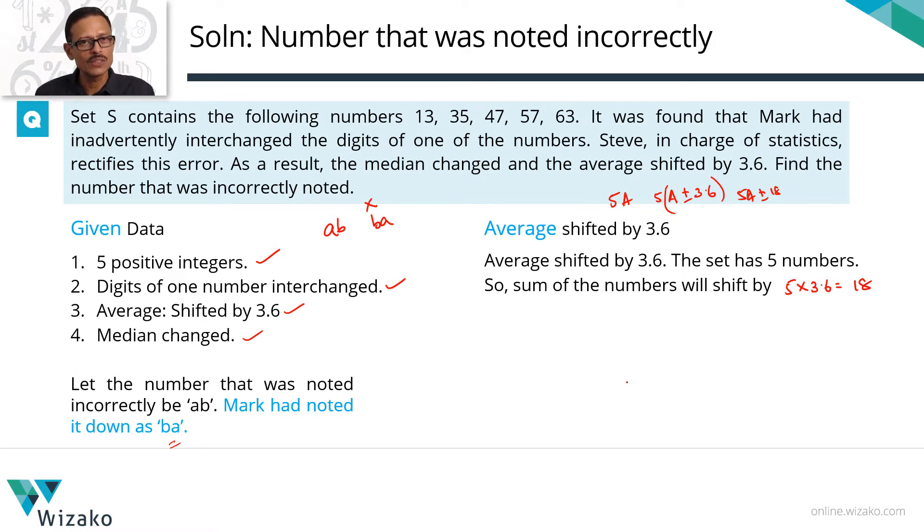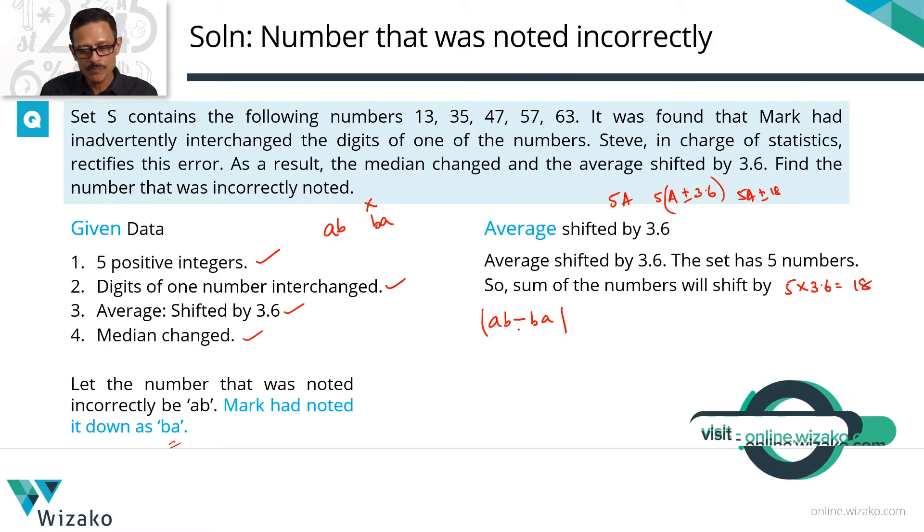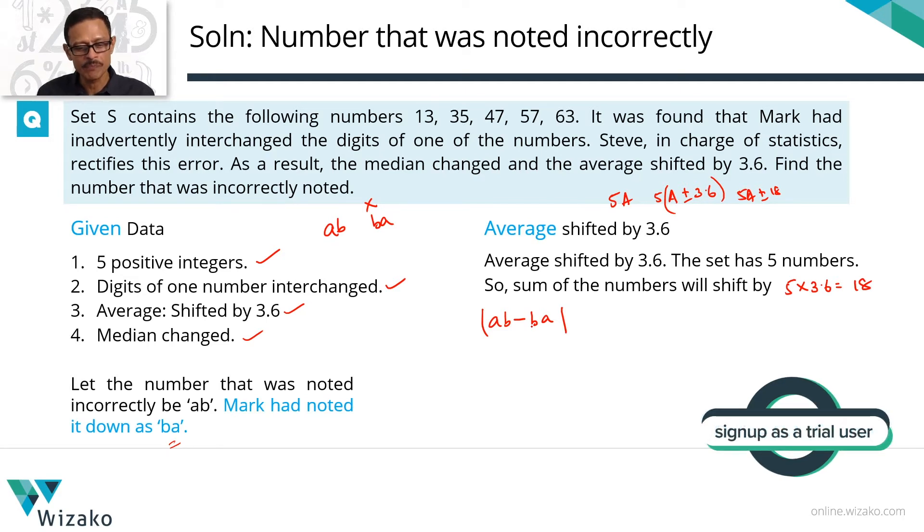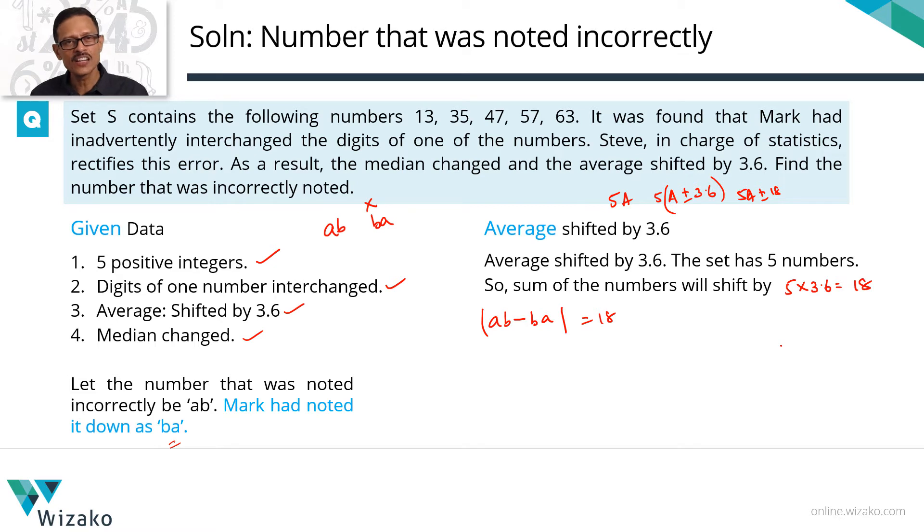How did this incorrect sum come about? That was basically because this guy wrote AB as BA. So the difference between AB and BA, instead of writing its difference, I'm writing it as AB minus BA within modulus. So it could be minus 18 or plus 18. We're interested only in the magnitude. So difference between writing the number as AB and BA is equal to 18. Average shifted by 3.6 for five numbers. So sum would have shifted by 18. How did the shift of 18 come about? He did not write four numbers incorrectly. He wrote them correctly. Only one of the numbers he wrote incorrectly. That is the only number that would have contributed to the sum changing by 18. So difference between writing the number as AB and BA has to be equal to 18.